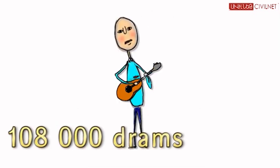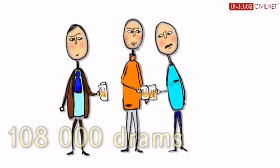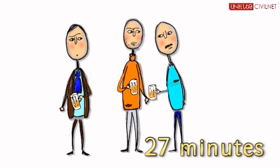With an average monthly salary of 108,000 drams, Vascon must work 27 minutes to make enough to purchase a bottle of beer.